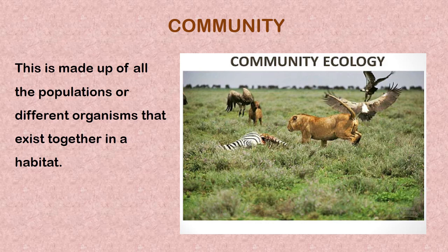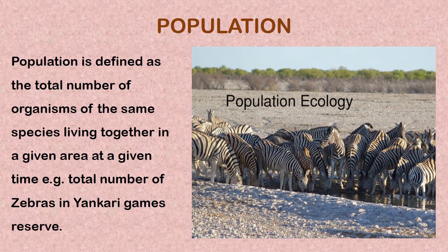What is a community? The community is made up of all the populations or different organisms that exist together in a habitat. Looking at this particular habitat, you can see zebras, lions, birds, and grasses. All these different species of organisms living in a particular habitat constitute the community in that habitat.